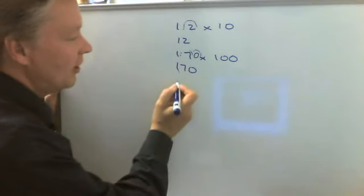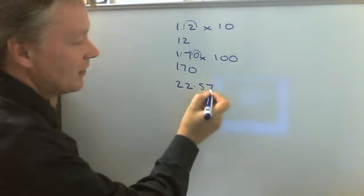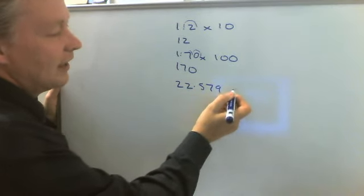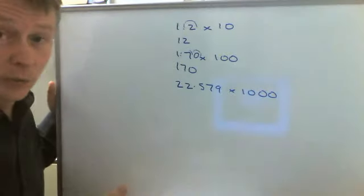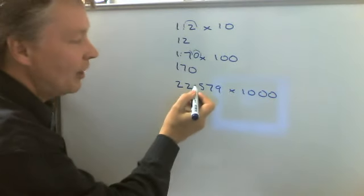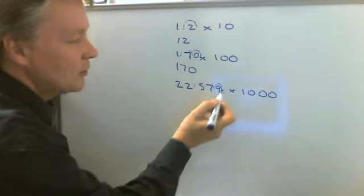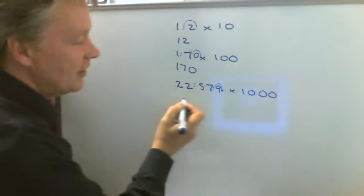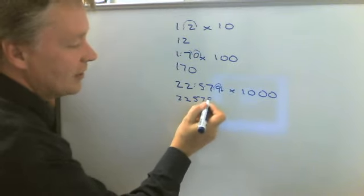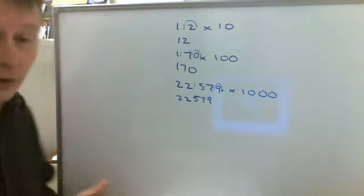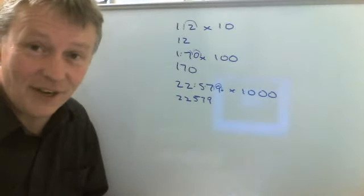So let's say we're multiplying by 1000. It's exactly the same principle. So we've got 22.579 and we're multiplying by 1000. So we're going to move the decimal point by three places. One, two, three, which would be there. So the answer to that would be 22,579.